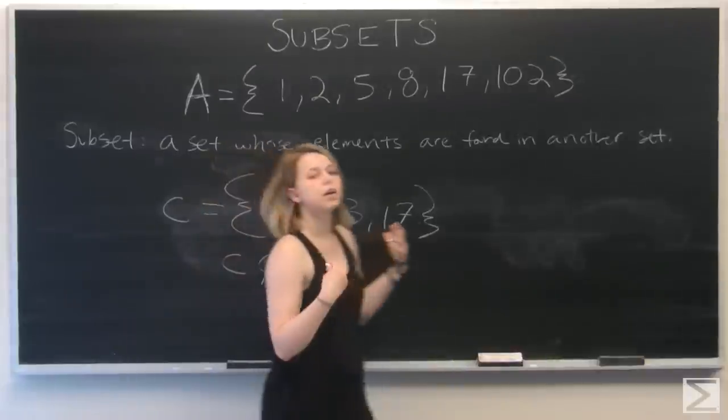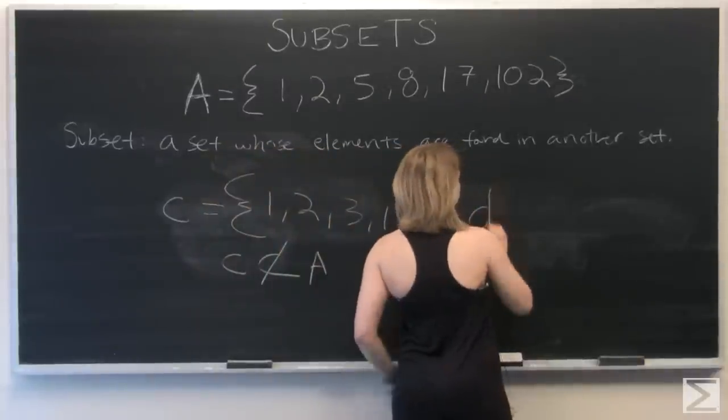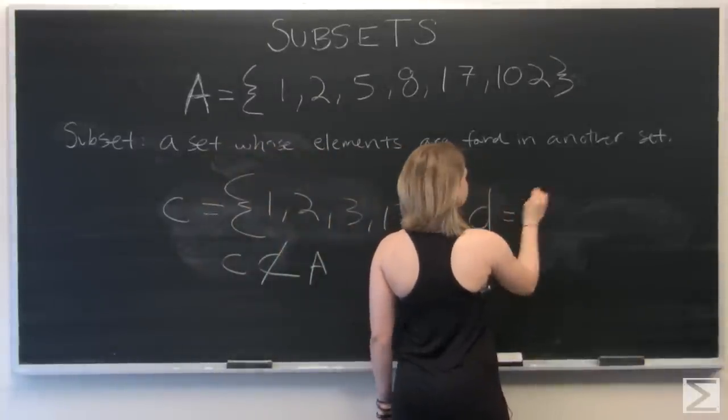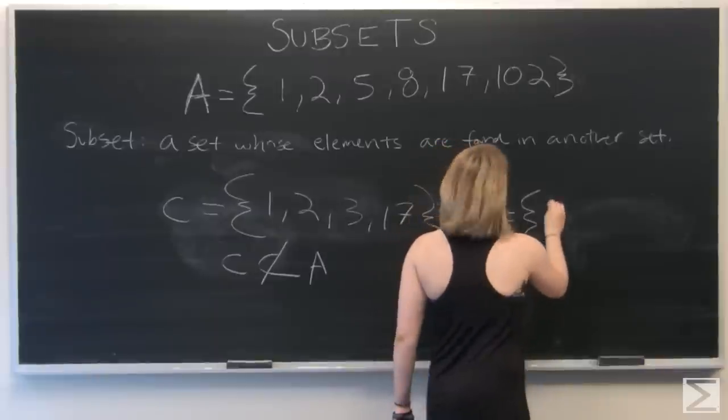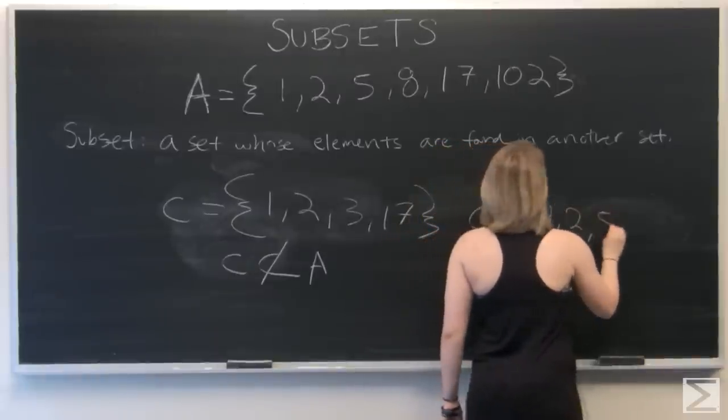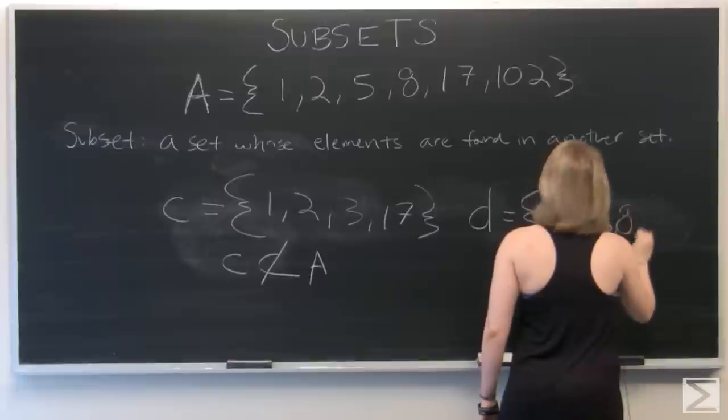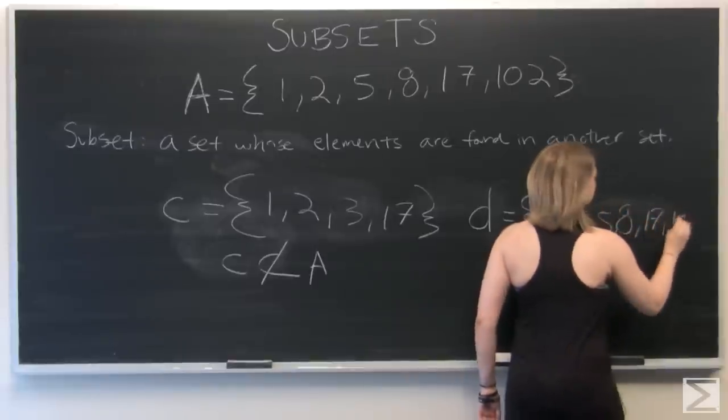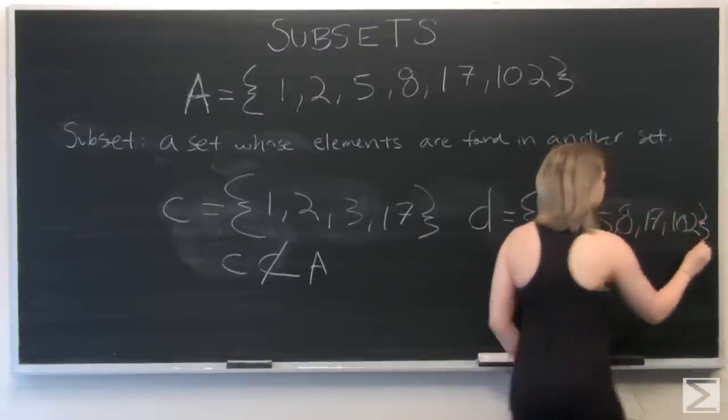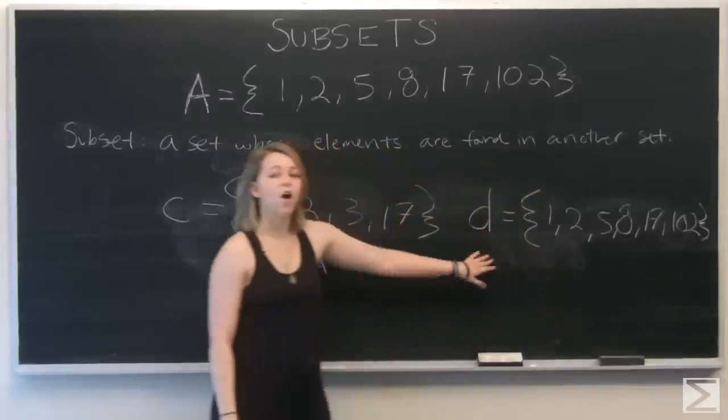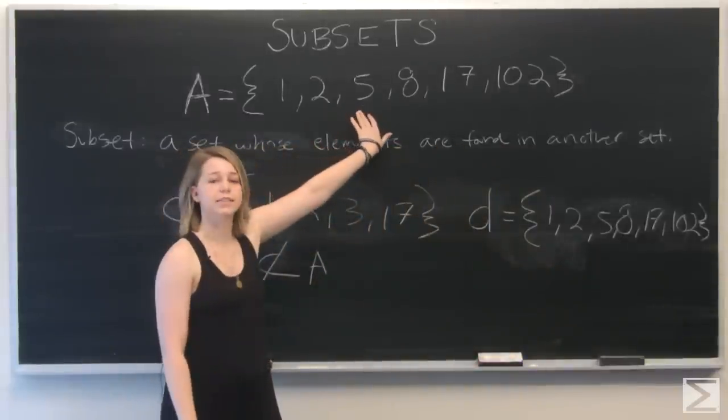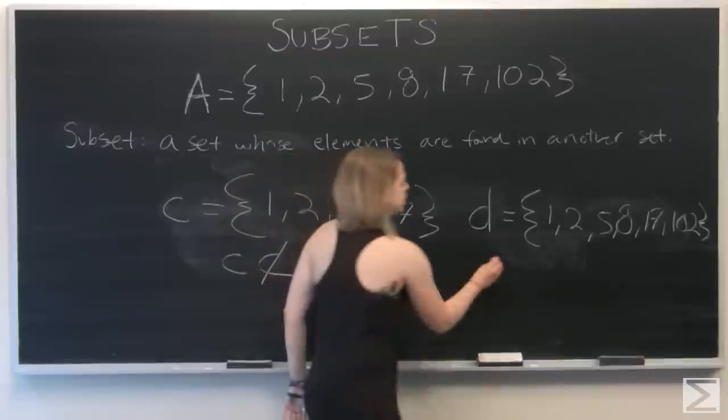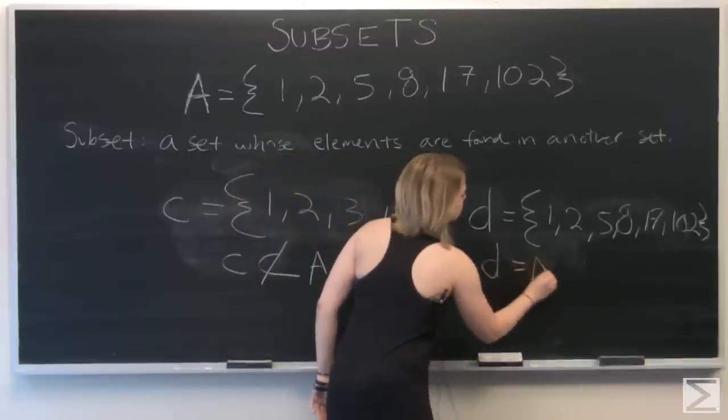What if we had set D with elements 1, 2, 5, 8, 17, and 102? Set D has all of the elements that are in set A. In fact, set D is equal to A.